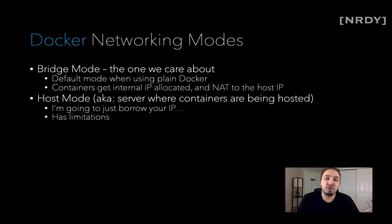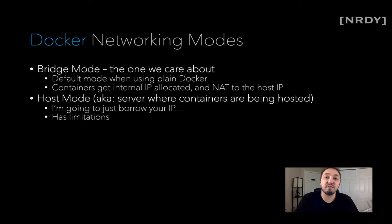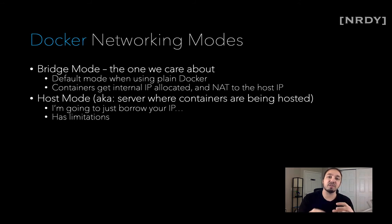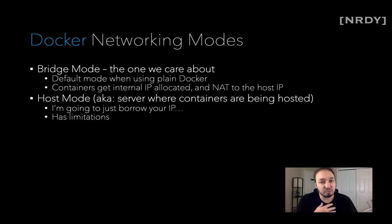The next mode available is host mode, and this is a lot simpler than bridge mode. All we're really doing is saying the container is going to bind itself to whatever the IP of that VM or bare metal server is that's hosting the containers. So in that example, if the VM's IP is 254.11 and that's the VM hosting Docker and all the containers on top of it, then in host mode 254.11 becomes the container's IP as well. If I expose port 80, I just navigate to 254.11 at port 80 and I'll get to my container.